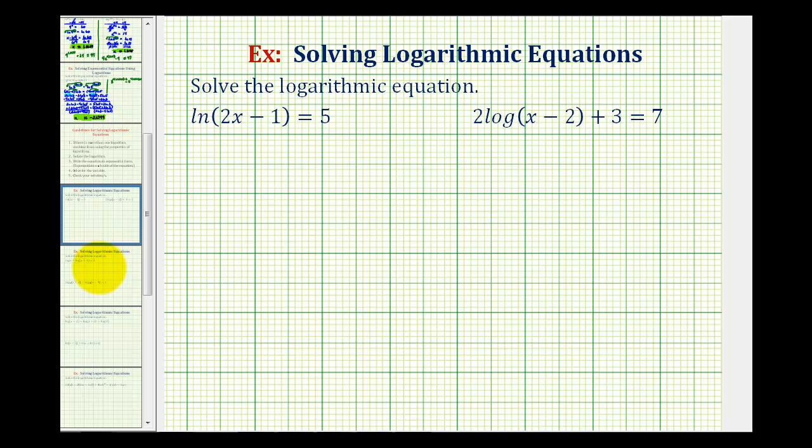Looking at our first example, we have natural log of the quantity two x minus one equals five. We have a single log and it's already isolated, so we'll go ahead and write this in exponential form. We need to recognize that since it's natural log, the base is e.